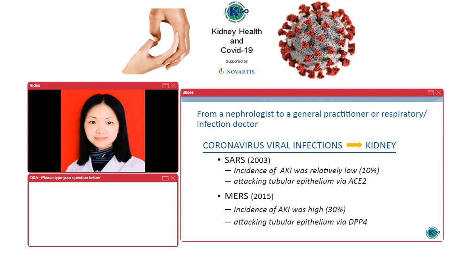Regarding coronavirus infection in the kidney: in this century there have already been two outbreaks. First was SARS in 2003, the other was MERS in 2015. The incidence of AKI in SARS was relatively low at around 10%, with the SARS virus attacking tubular epithelial cells via the ACE2 receptor. For MERS, the incidence of AKI was high at around 30%, attacking tubular epithelial cells via DPP4.